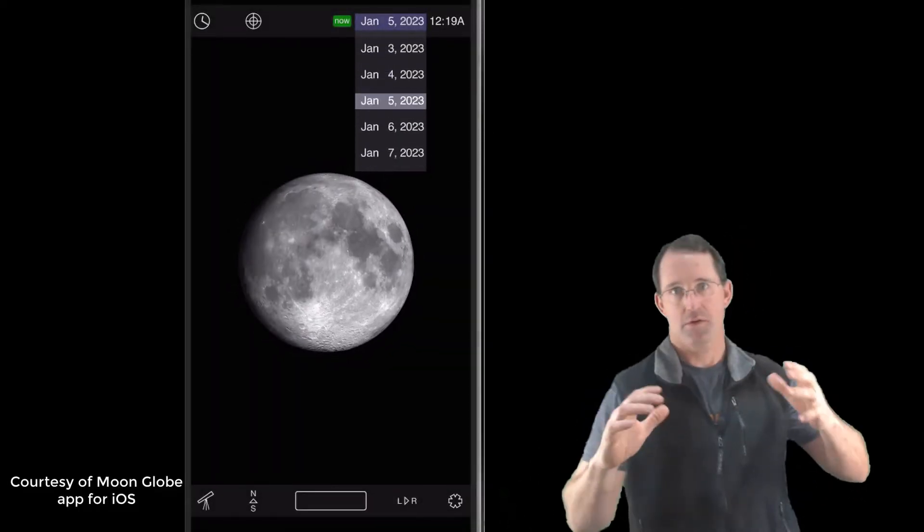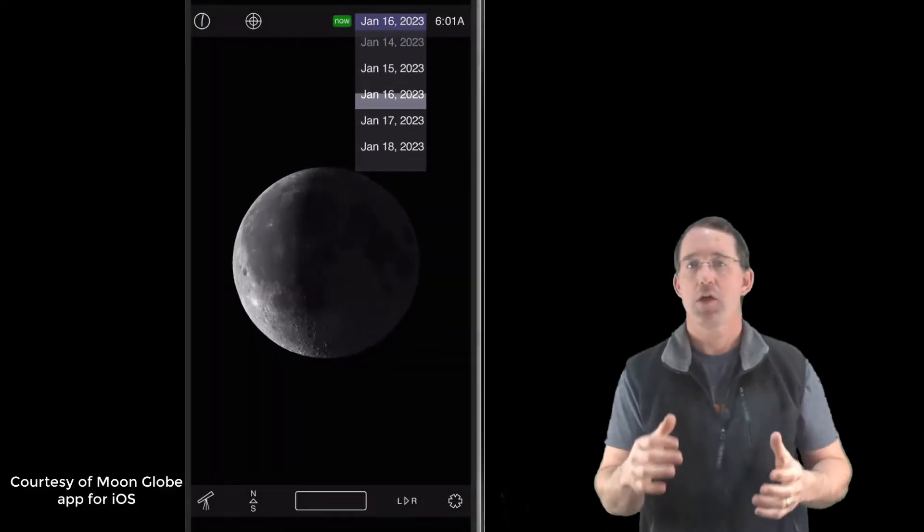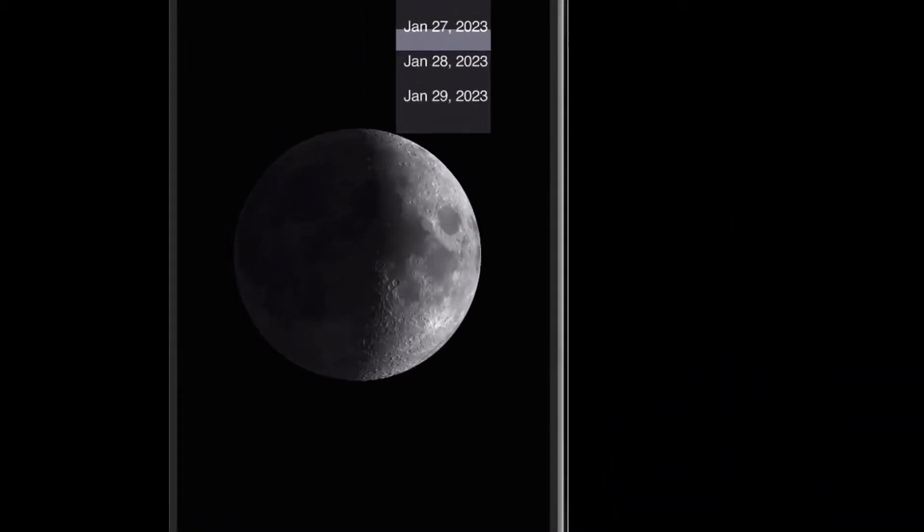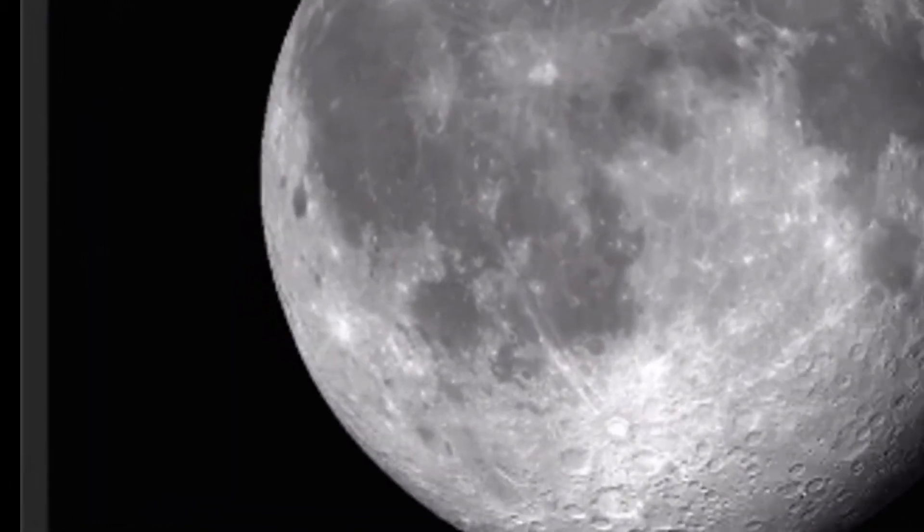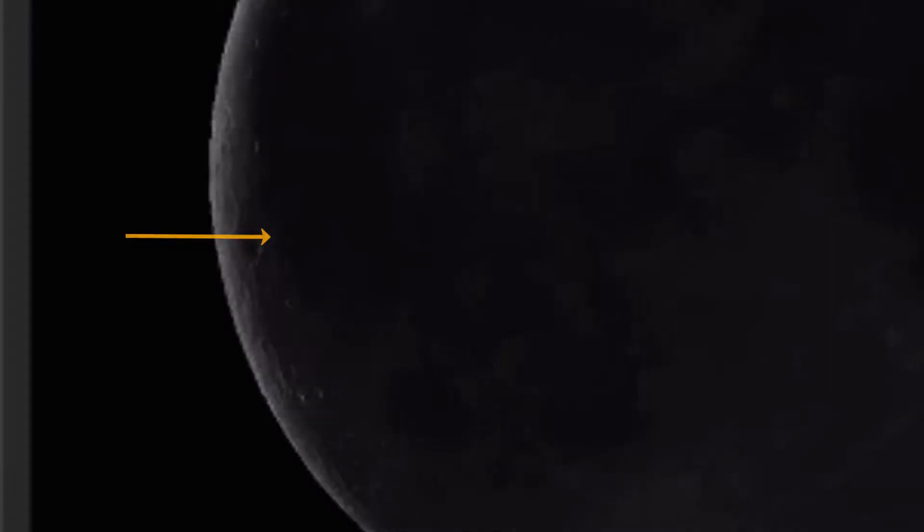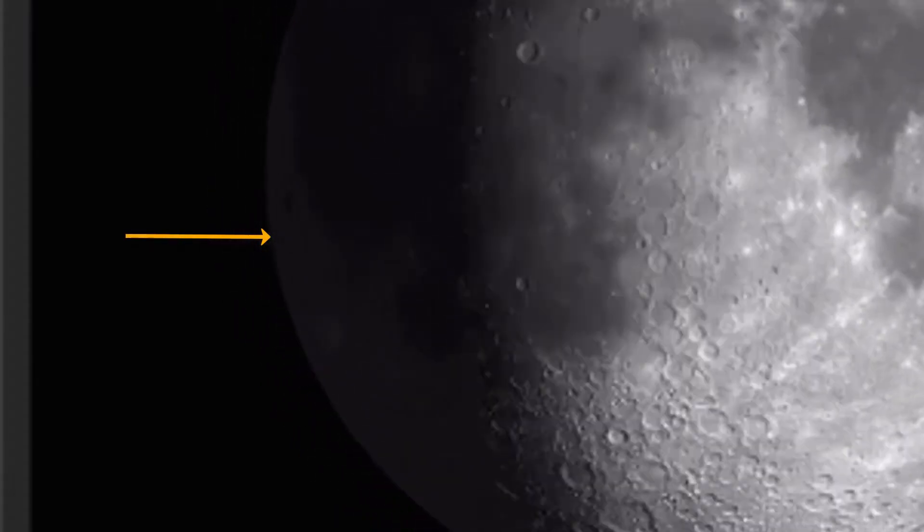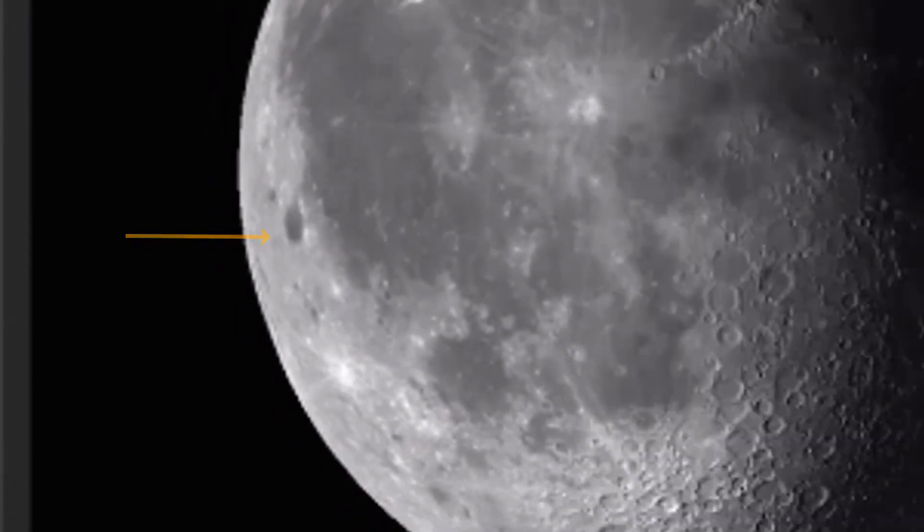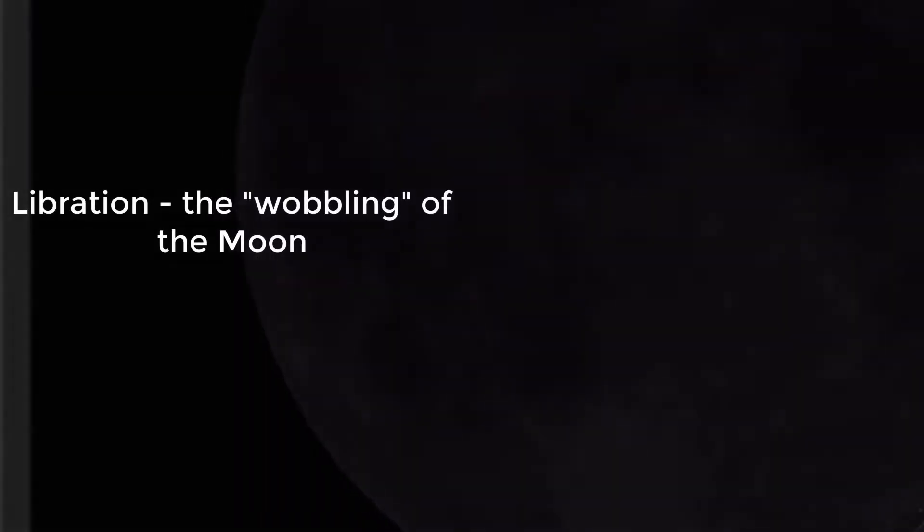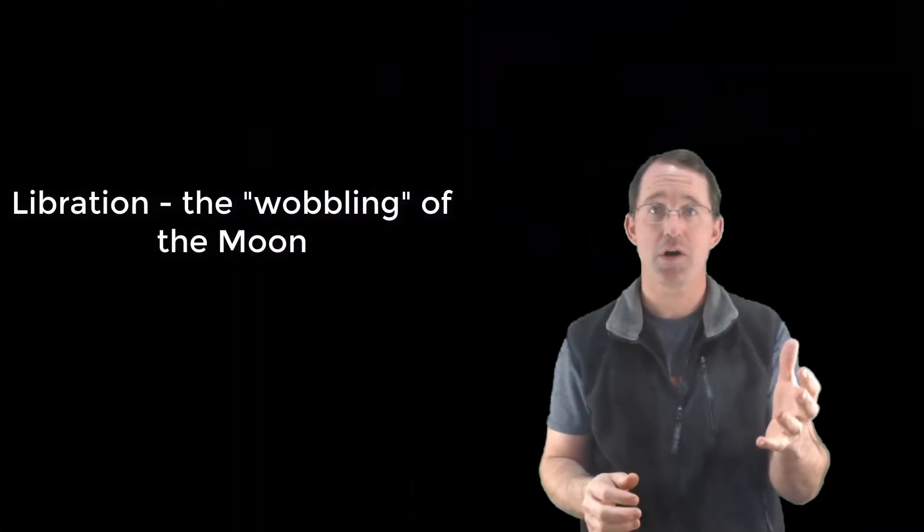The moon wobbles during the course of a month. It's easiest to see if you zoom in on the edge of the moon, and you can watch the distance between some feature and the lunar limb change. We call this libration. And now the question is, what causes it?